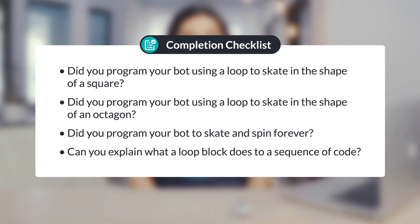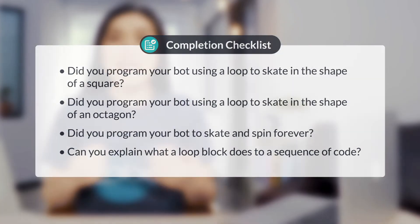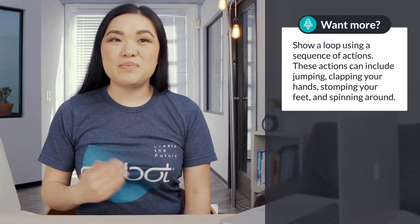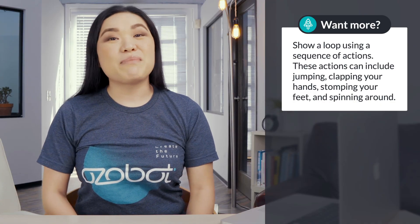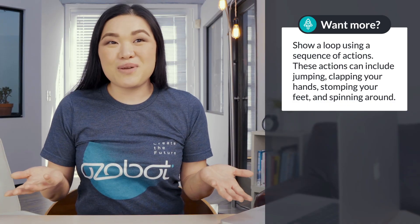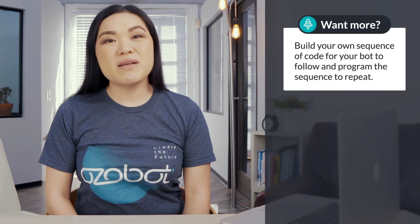Great work exploring loops. Let's check your work. Did you program your bot using a loop to skate in the shape of a square? Did you program your bot using a loop to skate in the shape of an octagon? Did you program your bot to skate and spin forever? Can you explain what a loop block does to a sequence of code? If you're looking for more to do, you can show a loop using a sequence of actions — jumping, clapping your hands, stomping your feet, or spinning around. Or you can build your own sequence of code for your bot to follow and program the sequence to repeat.